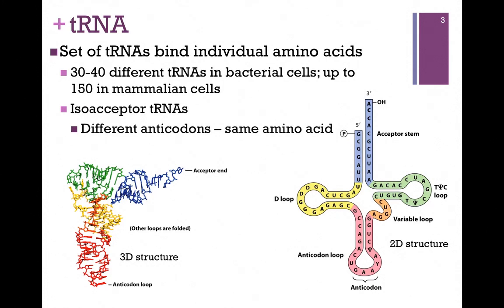There are up to 30 to 40 different tRNAs in bacterial cells, and mammalian cells have up to 150 that serve different functions. Recall that the genetic code is degenerate — that is, multiple codons specify the same amino acid. And so we have isoacceptor tRNAs: tRNAs that have different anticodons but accept the same amino acid.